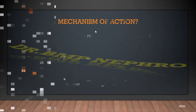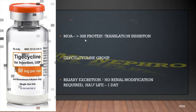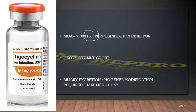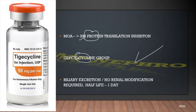The mechanism of action is that it is a bacteriostatic drug. It inhibits protein translation — basically, it binds to the 30S subunit of the ribosomes. It belongs to the glycylcycline group, almost similar to the tetracycline group.